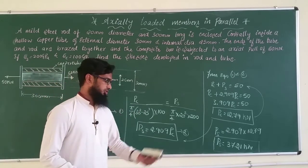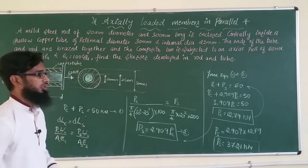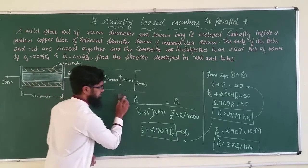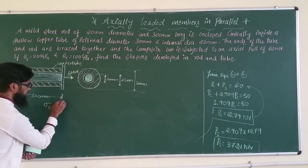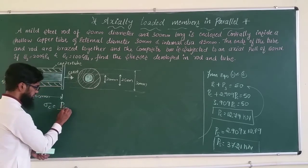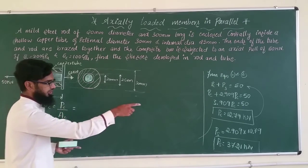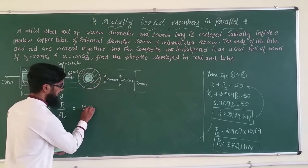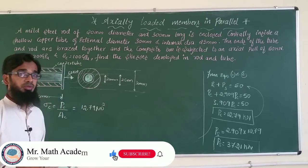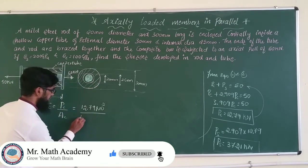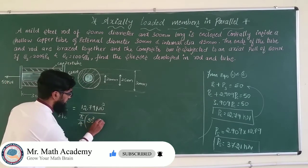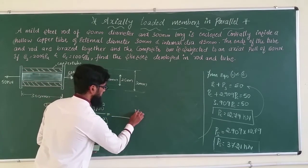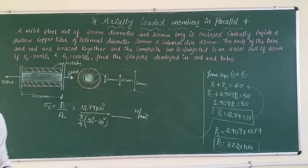Now we calculate the stresses. Stress in copper: σ_c = P_c / A_c = (12.79 × 10³) / [π/4 × (30² − 25²)]. This gives the stress in the copper tube as approximately 59.22 N/mm² (MPa).